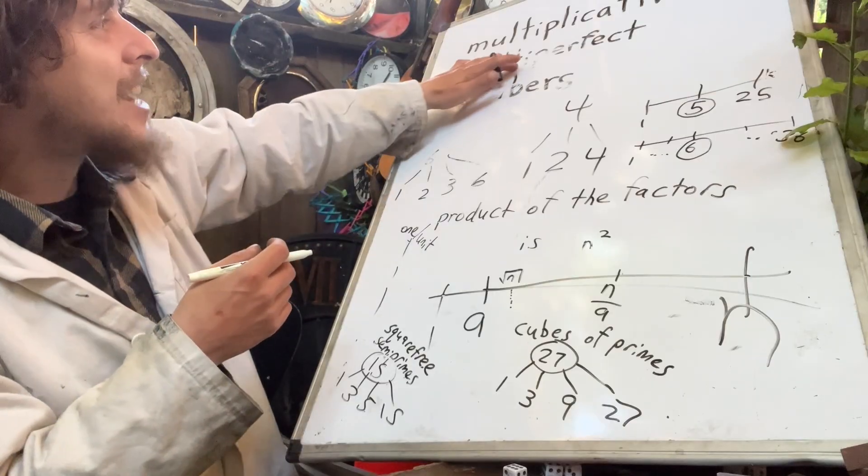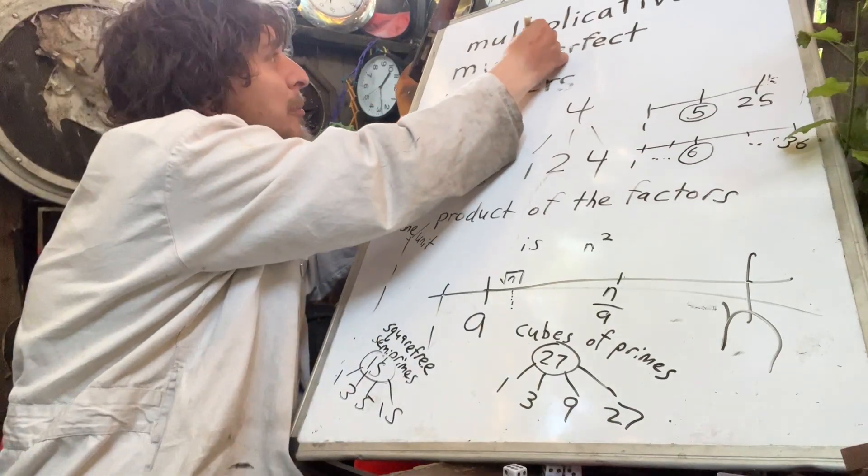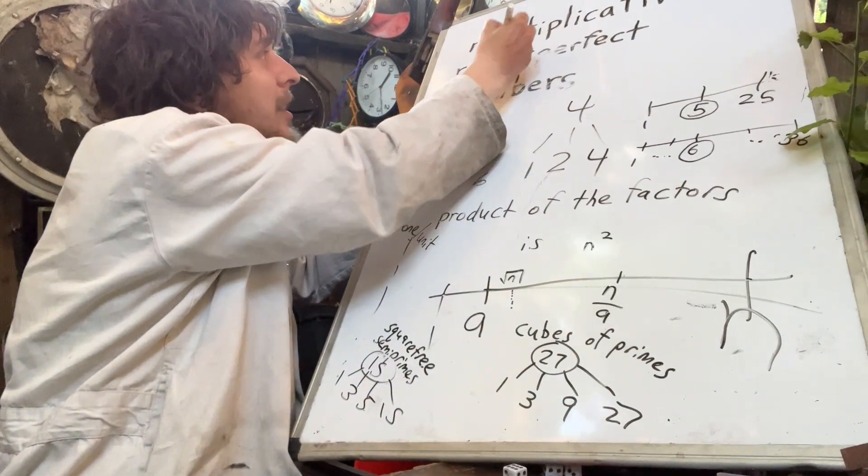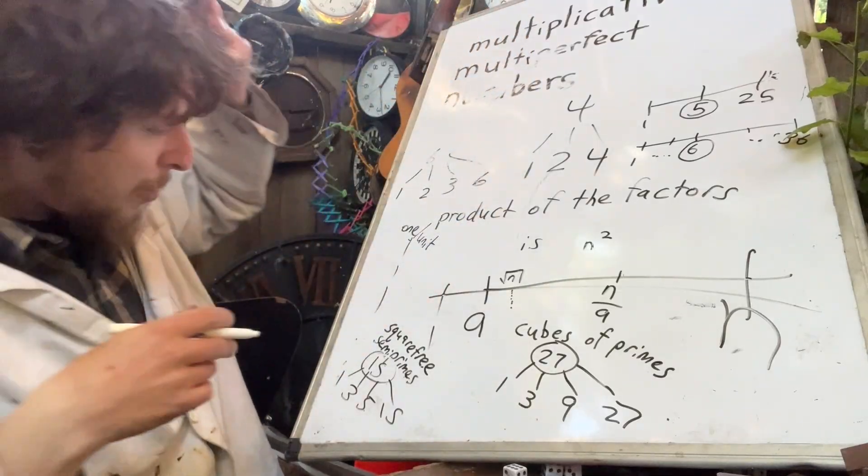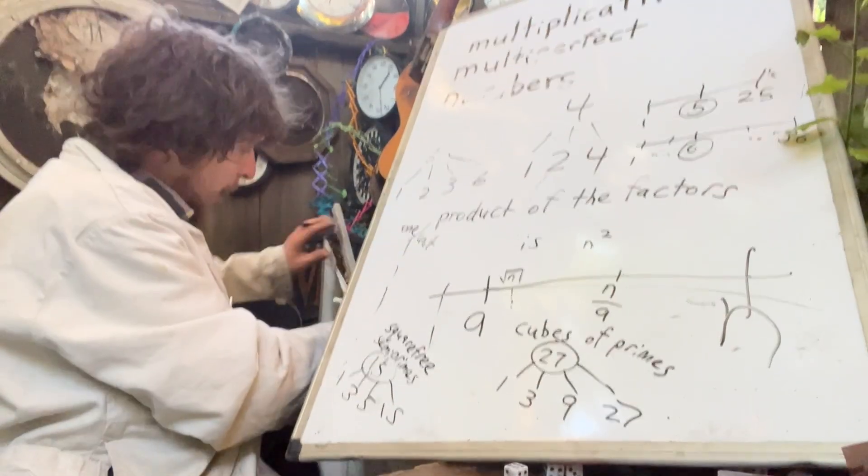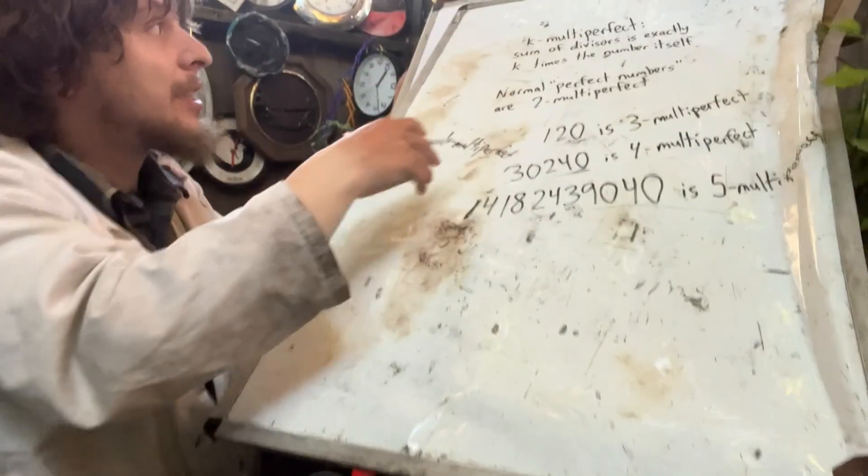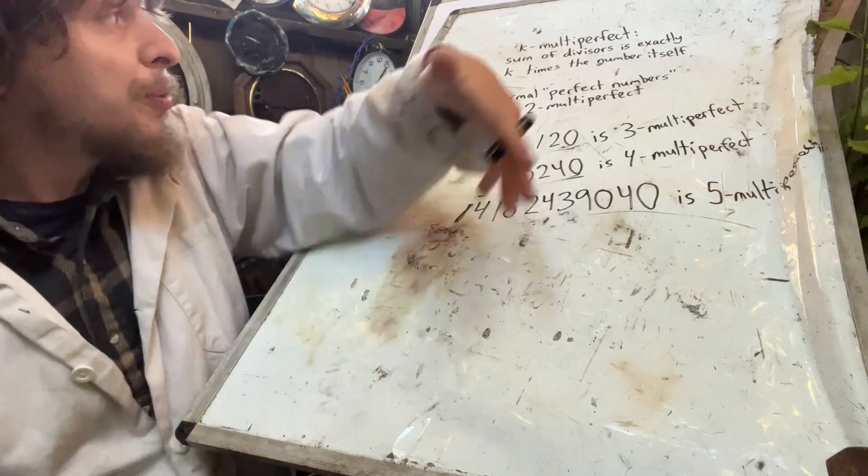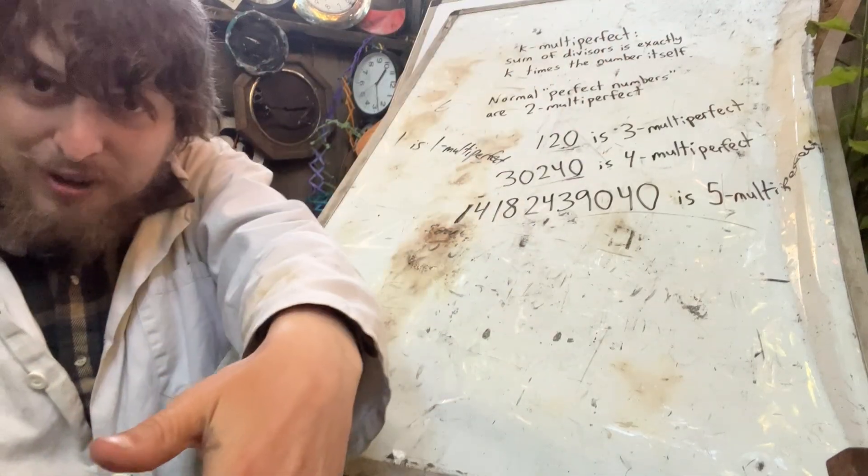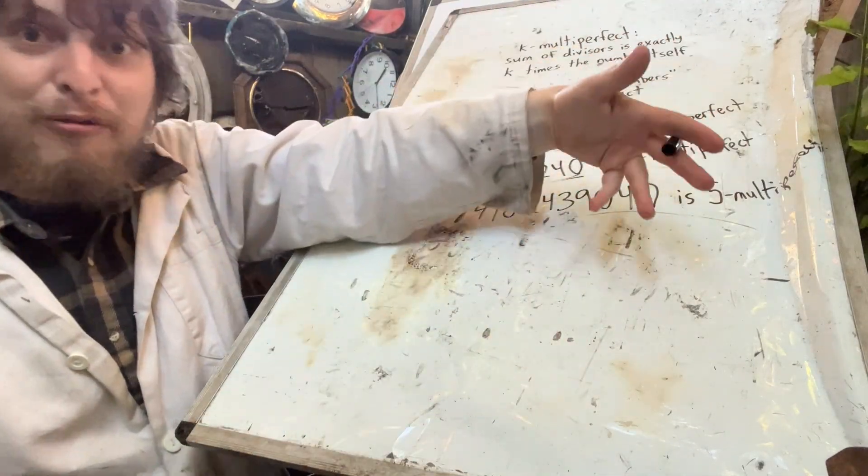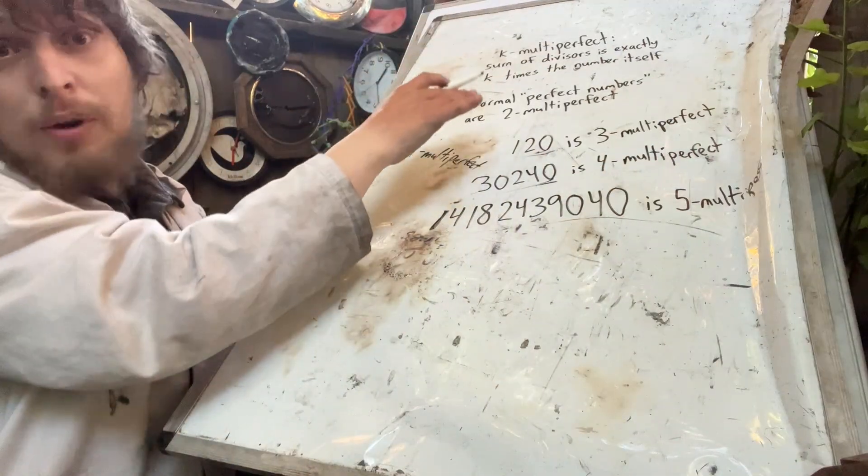But what about this extra multi I put in? We add an extra multi there. And that's because if we can take perfect numbers up to multi perfect numbers, why can't we take the multiplicative perfect numbers up to multiplicative multi perfect numbers?